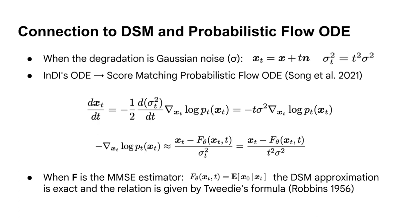In the particular case where the degradation is Gaussian additive noise, INDI ODE boils down to a score-matching probabilistic flow ODE. Actually, when f in our model is the MMSE estimate, the denoising score-matching approximation is exact and the relation is given by the Tweedie formula.